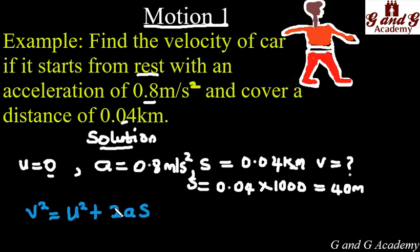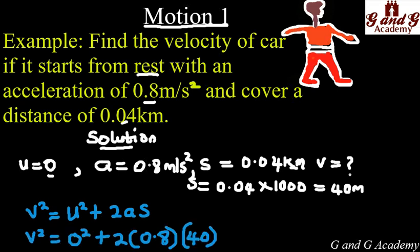Writing out equation 3, you can now begin to substitute. When you substitute, you are going to have v² equals zero squared plus 2 times a (which is 0.8) times the distance (which is 40).